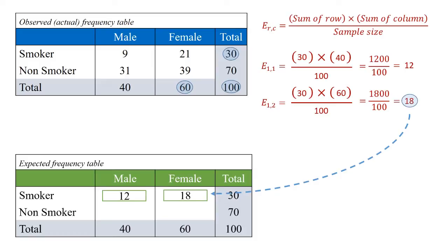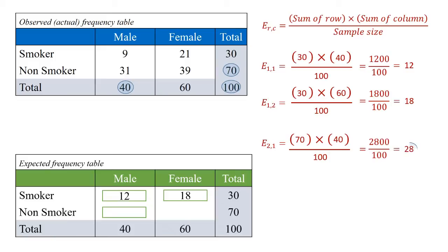Next, we'll do the value in the bottom left-hand corner of this expected table. In this case, we take the second row total, which is 70, times the first column total, which is 40, and divide by 100, the total sample size. This gives us a value of 28.